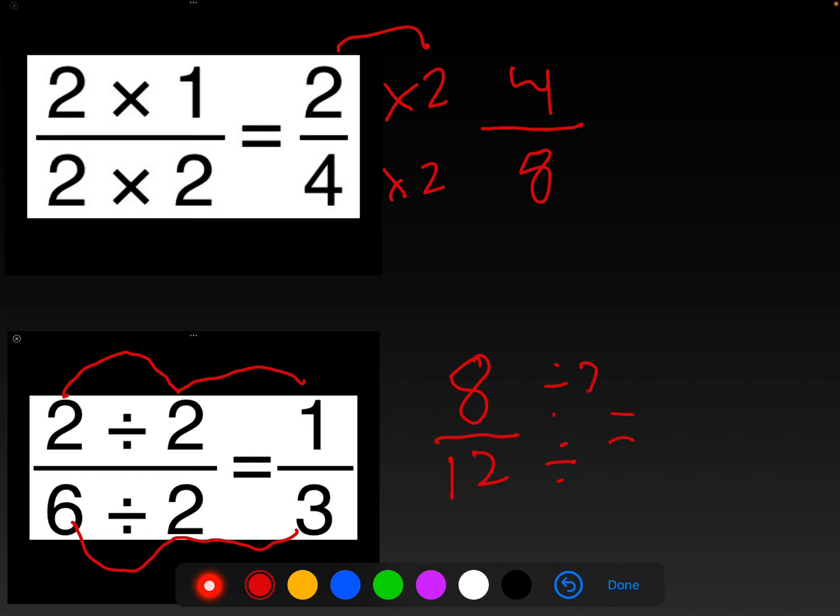So eight divided by two is four. Twelve divided by two is six. Okay, so that'd be another equivalent fraction. We can do it again. Divide both of them by two. Four divided by two is two, because two times two is four. And then six divided by two is three.